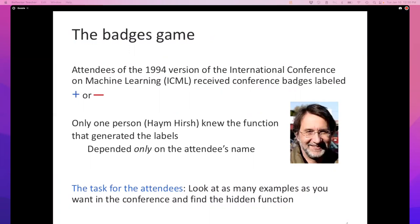Every time you attend a conference, at the beginning you need to go to the registration desk and sign up. What they will do is give you a badge with your name on it. That's what happened in the 1994 conference on machine learning. At that time, this conference had about 300 attendees — this was the premier conference for machine learning. Everyone got a badge with their name and affiliation, but every badge also had a plus or a minus.